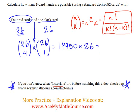So 26 times 14,950 works out to be a large number, 388,700 ways that we can have a five-card hand with four red cards and one black card. So many ways.